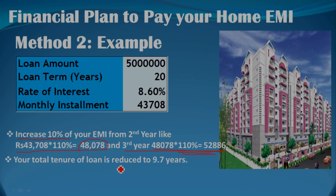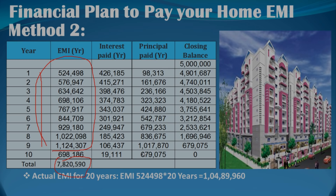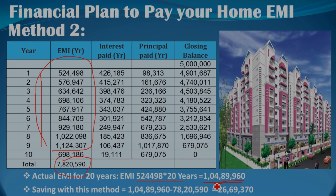We will reduce the loan tenure in the last 10 years. Let's plan the total loan repayment in the second period. Let's look at this table. We will make the maximum loan payments in the first 9 years and complete the total EMIs in the last 10 years. We can also save on tax, which will save a total significant amount.